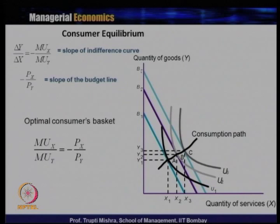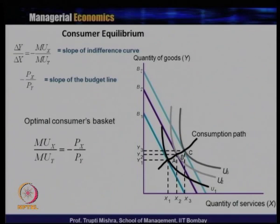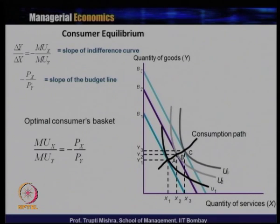The conditions for consumer equilibrium: MUx/Px = MUy/Py is the algebraic condition, and the budget line being tangent to the indifference curve is the geometric condition. There are three indifference curves U1, U2, U3 and three budget lines B1, B2, B3. If the consumer's income equals B1, the consumer can only reach a combination on indifference curve U1.